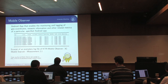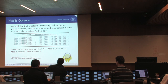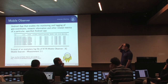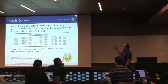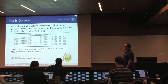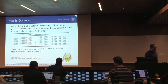We developed a simple mobile app for Android devices which is able to monitor and log geo-coordinates, network information, and other related metrics of a particular specified Android app. We have the longitude, latitude, number of updates, operations per measurement interval, operator ID, operator name, received signal strength, cell ID, LAG ID, network type, and so on. We also included the volume of transmitted bytes per measurement interval.